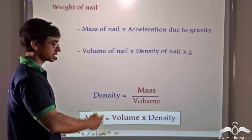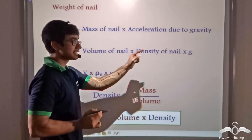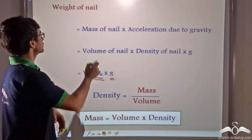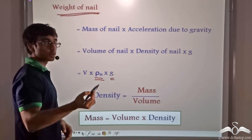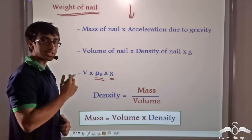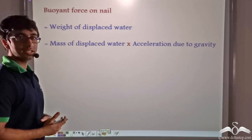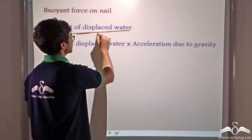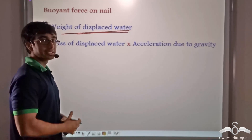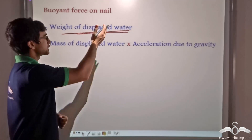Symbolizing this equation, we write it as V·ρ_n·g, where V is the volume of the nail, ρ_n is the density of the nail, and g is the acceleration due to gravity. That is the downward force on the nail. Now to find the buoyant force — the upward force — according to Archimedes' principle, the buoyant force on the nail equals the weight of the displaced water, that is the amount of water displaced by the nail on submerging.